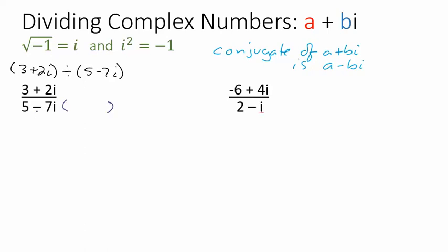Here's my denominator, 5 minus 7i. The conjugate of that is 5 plus 7i. I can't just multiply the denominator of a fraction — that wouldn't create an equivalent value. Whatever I do to the denominator, I have to do to the numerator as well. So 5 plus 7i over 5 plus 7i is equivalent to 1 — I'm multiplying by 1, so I'm not changing the value of my initial fraction. We're trying to get an answer in the form a plus bi.